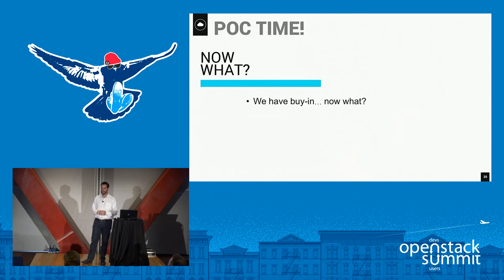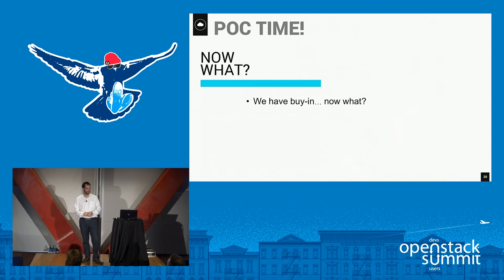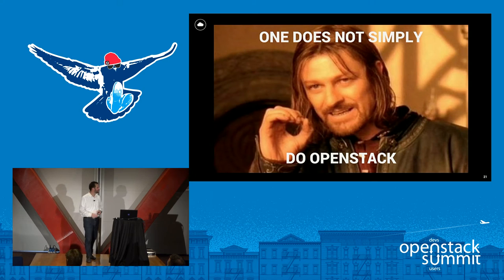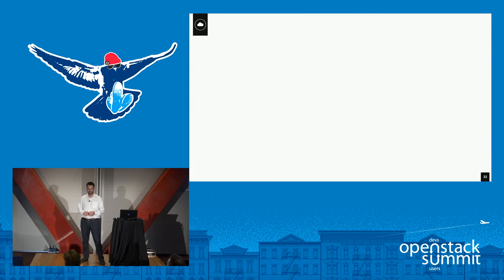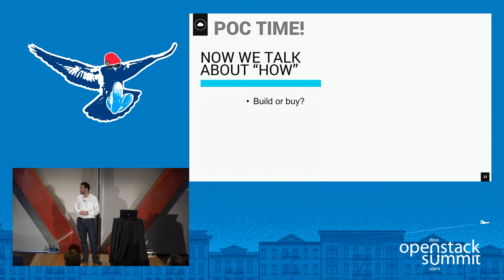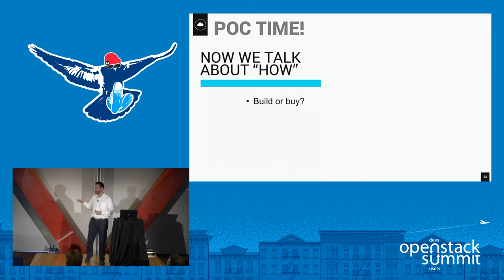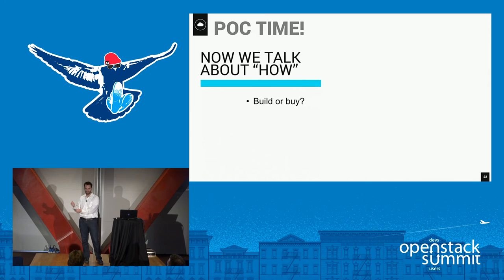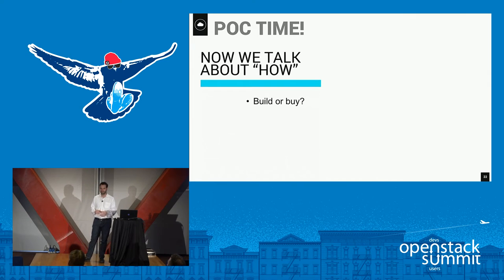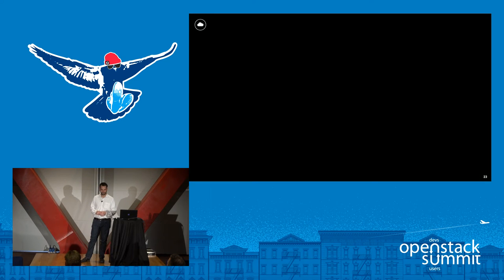Now let's say we've gone through all these steps and actually got buy-in. Now it's time to do a proof of concept. Famous words: one does not simply do OpenStack. It's actually quite complex and there are lots of different ways to do it. We're going to talk about the pros and cons of all the major ones. The first fundamental question you have to answer is: do we build it or do we buy it? There's no one right way, and one size does not fit all.